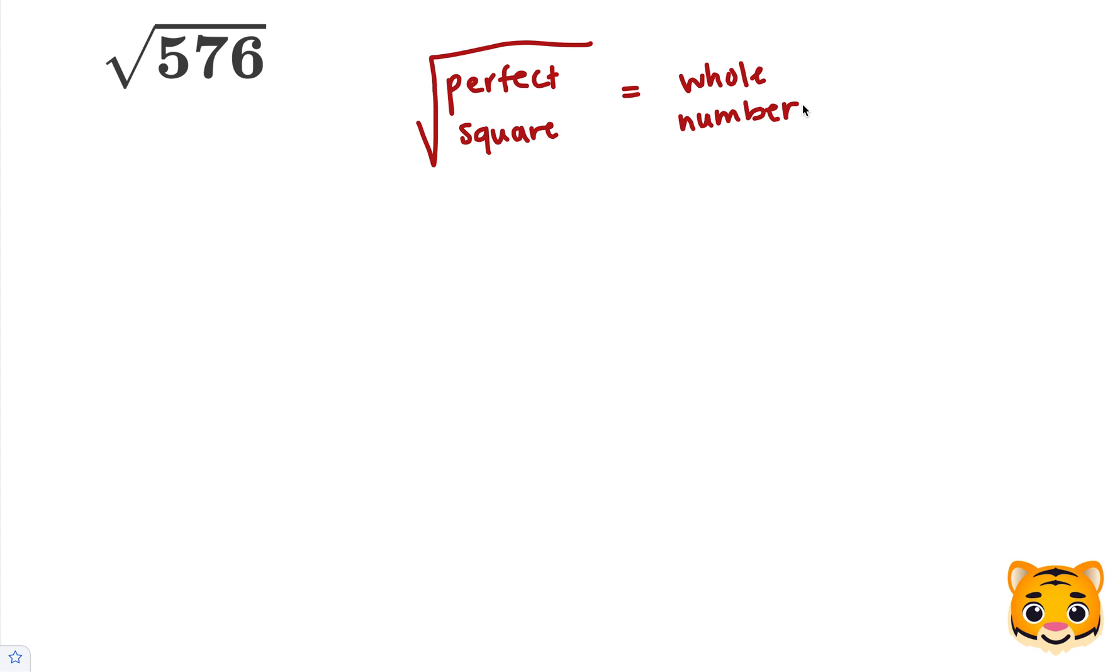So we want to figure out what number times itself gives us 576. We can try estimating by first trying something like 20 squared. 20 squared is 400, so we're quite far away from 576.